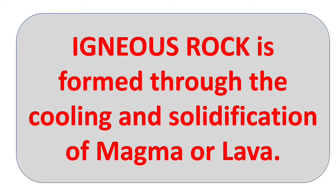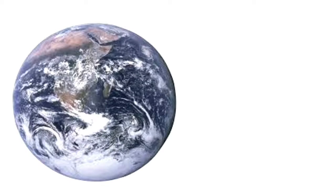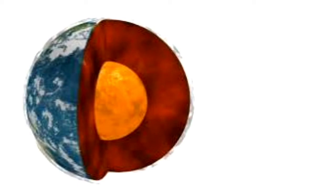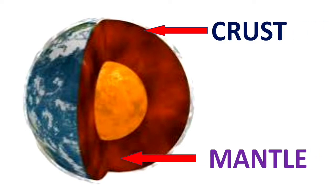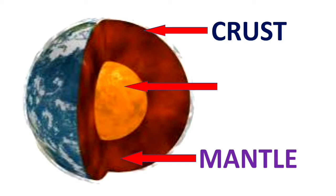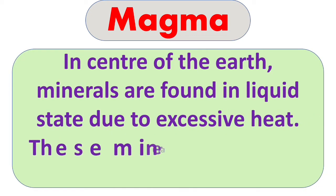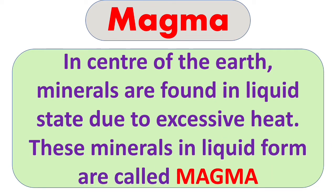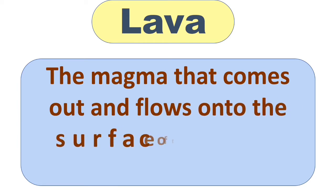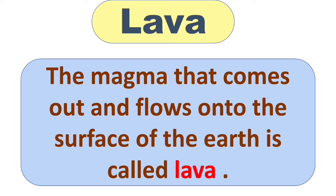So what is magma and lava? Look at this picture — our earth is composed of three main layers. The upper layer is the crust, next is the mantle, and in the center of the earth is the core. Minerals are found in the center in a liquid state due to excessive heat, and these minerals in liquid form are called magma. The magma that comes out and flows onto the surface of the earth is called lava.